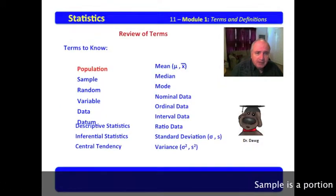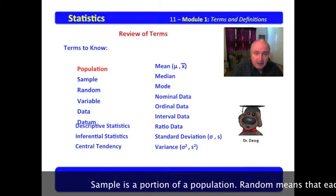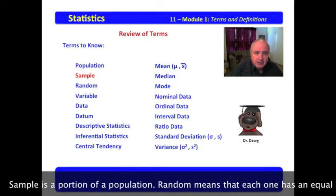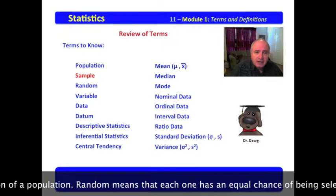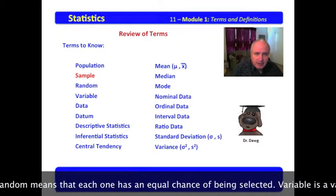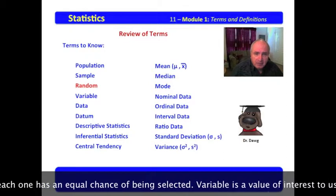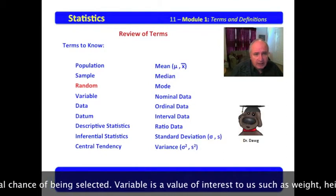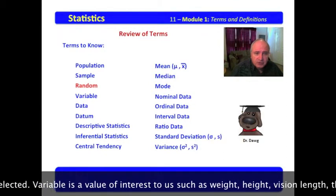The first of these is population. Population is every element in a universe of interest. Sample is a portion of a population. Random means that each one has an equal chance of being selected.